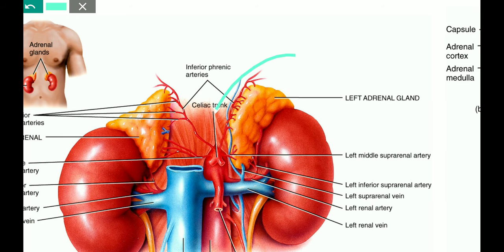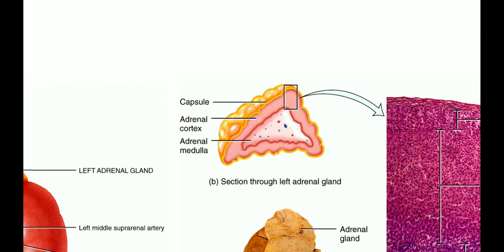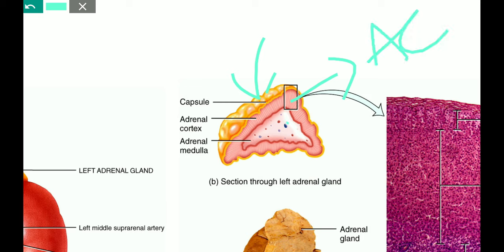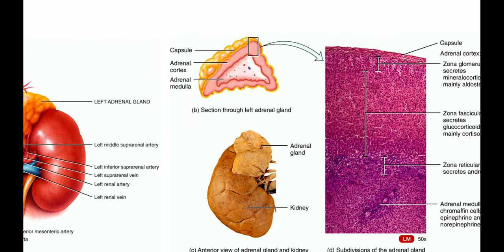There is a pair of adrenal glands, one on each kidney. In terms of anatomy, each adrenal gland is entirely covered by a connective tissue capsule. It has two regions: the outermost is the adrenal cortex, and the inner region is called the adrenal medulla. The adrenal cortex has three types of cells or three zones.